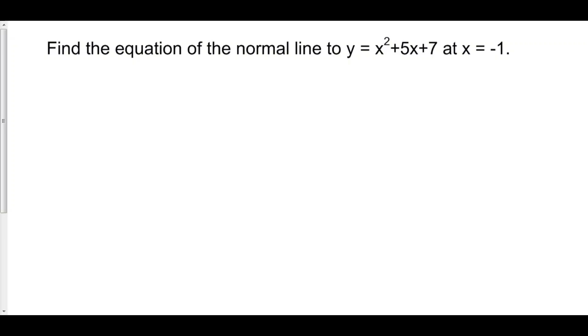Find the equation of the normal line to y = x² + 5x + 7 at x = -1. Well, there are two things that you need for a line.